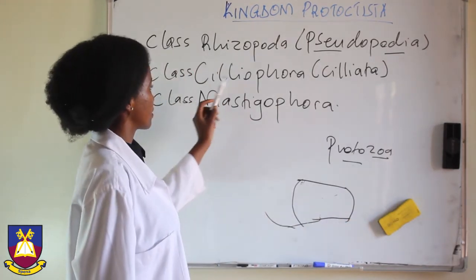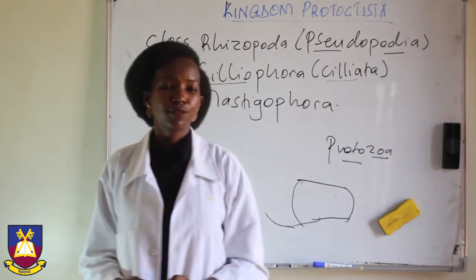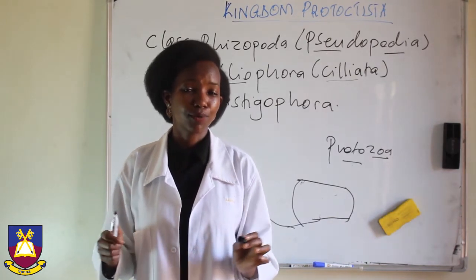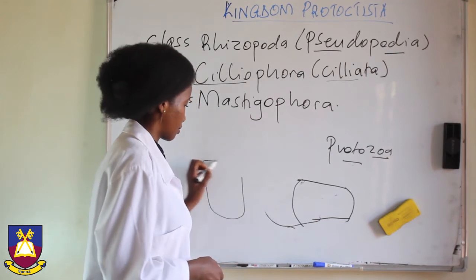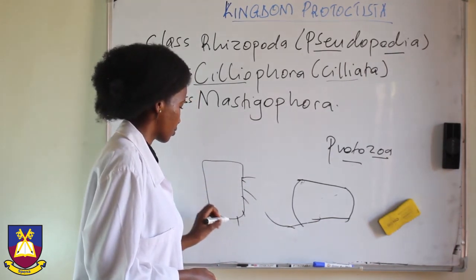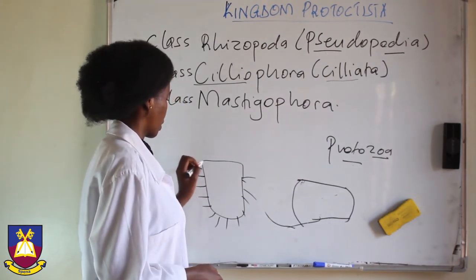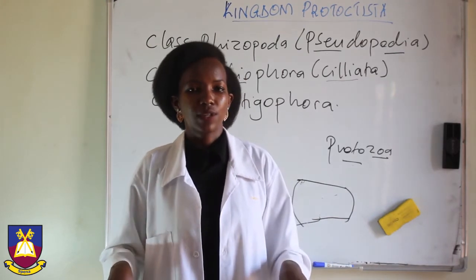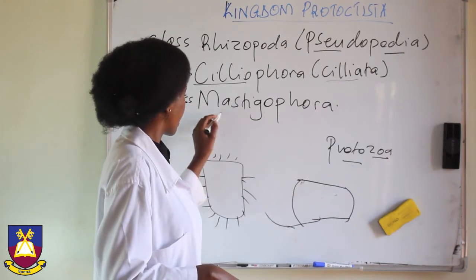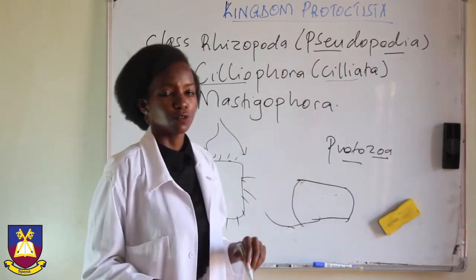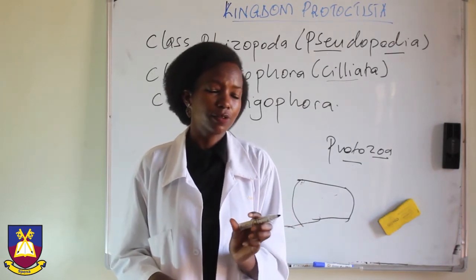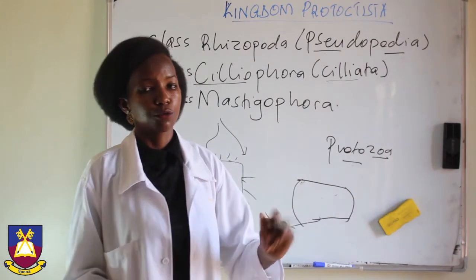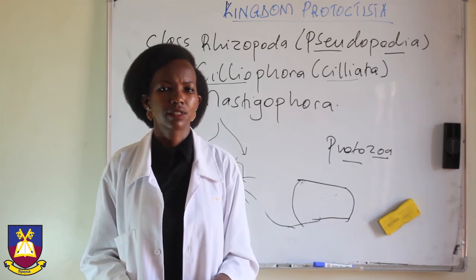Next is Class Ciliophora, also called Ciliata. Cilia are hair-like projections on the body of the cell — if this is my cell, it has hair-like extensions all over. These move in a rhythm and create a current. They can either lead to movement of the organism, or they can create a current of water that brings food close to the organism. Organisms that move by the help of cilia belong to Class Ciliophora or Ciliata. An example is the paramecium.